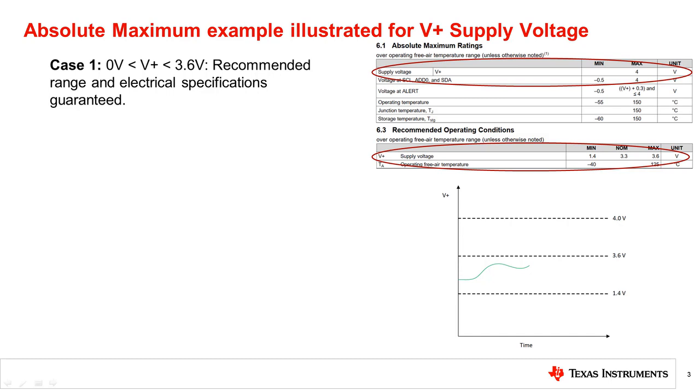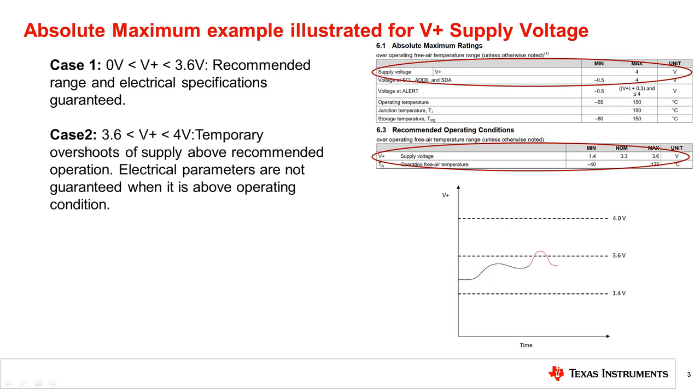In the second case, let us assume that transient spikes occur on the supply voltage. The transient spikes cause the device supply voltage to exceed the maximum specified in the recommended operating conditions, in this example 3.6 volts, but below the absolute maximum rating of 4 volts. In such a scenario, the device will not be damaged, but one or more of the electrical specifications are no longer guaranteed.